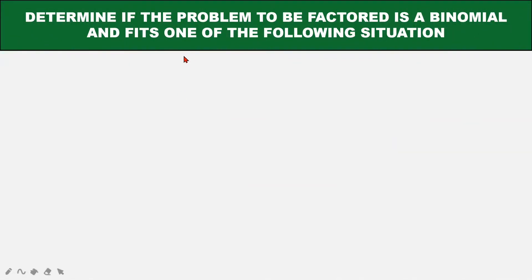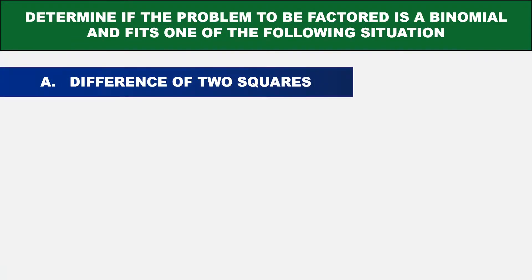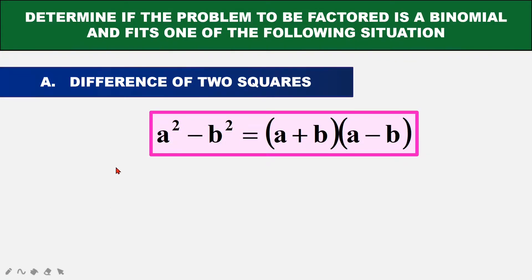Next, we need to determine if the problem to be factored is a binomial and it fits one of the following situations. Let's look at the first case where we have difference of 2 squares. For example, we have this question. Now, when we check 9X squared minus 25Y squared, it fits this situation.